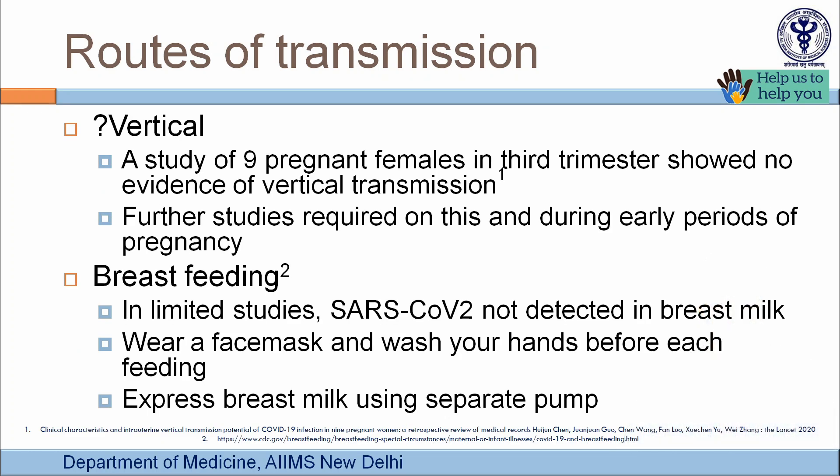Regarding vertical transmission: a study of nine pregnant females in their third trimester found no evidence of vertical transmission to their children, and the virus was not isolated in the amniotic fluid. However, further studies — particularly in the first and second trimester — are required to confirm this.